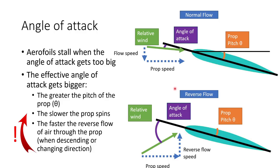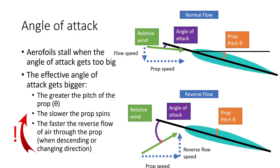Now consider a reverse flow situation — maybe you're doing a hard 180 or descending very rapidly. Now you've got air flow coming up through the prop. You can see immediately that the relative wind direction has changed a lot and the angle of attack has gotten much bigger. And if we decrease the prop speed, the angle of attack increases even more. That means if the propeller speed drops down, the likelihood of the blade stalling gets much, much higher.